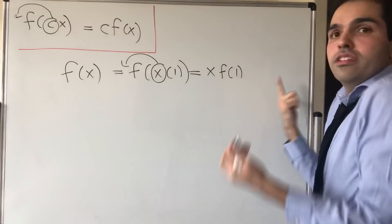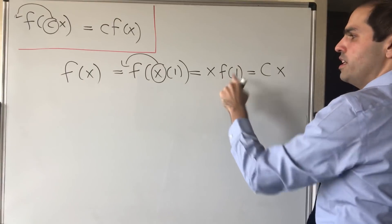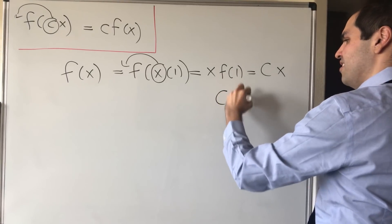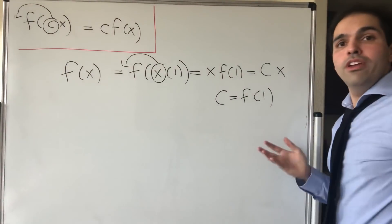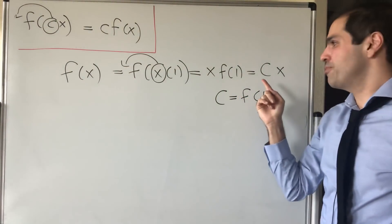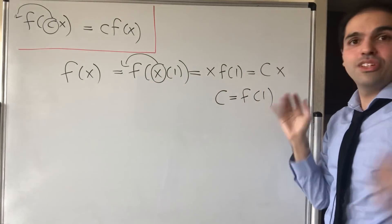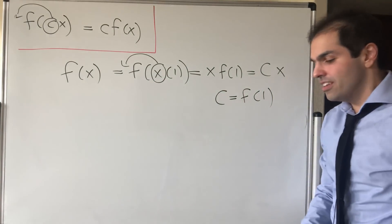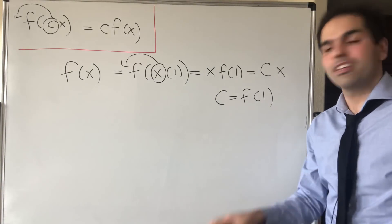Notice this is of the form c times x, where c is literally just f of 1. In other words, the only functions with this property are precisely the linear ones. So f of x equals a constant times x. So in the case from R to R, this is completely solved.